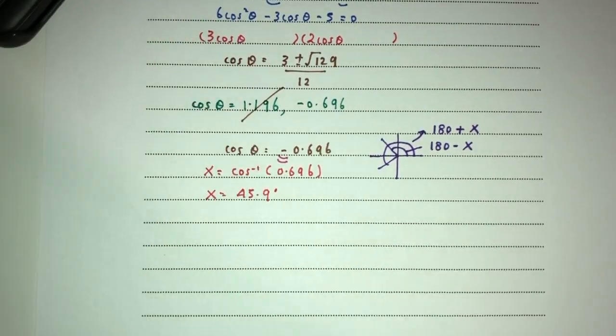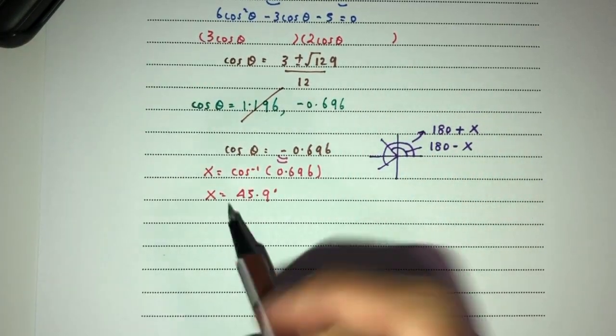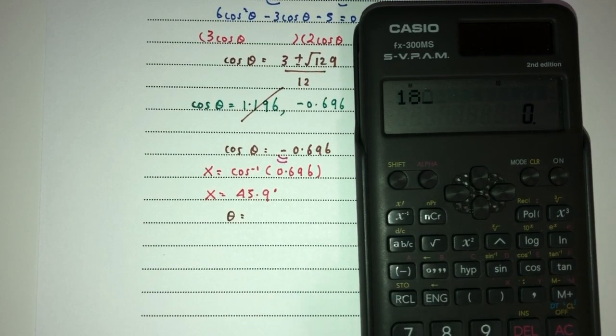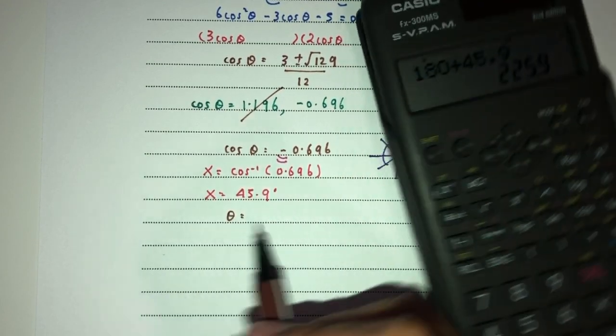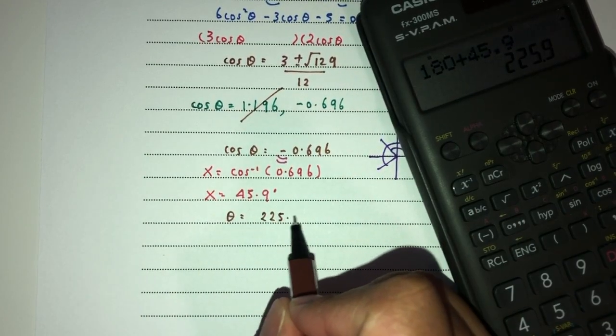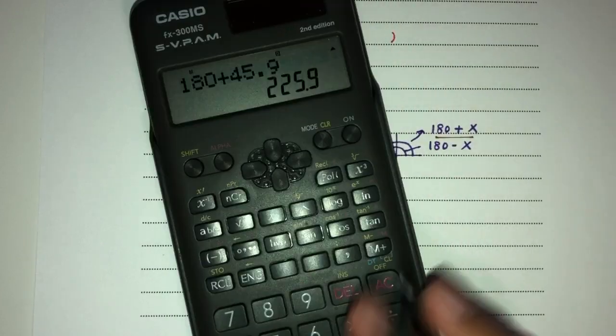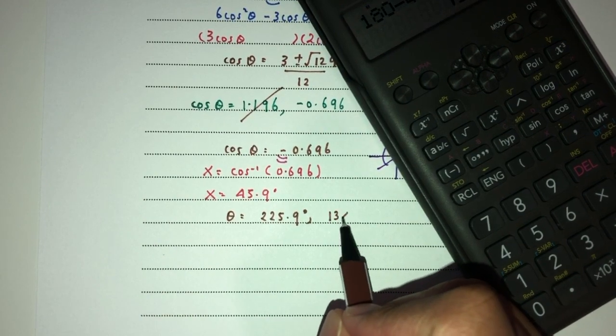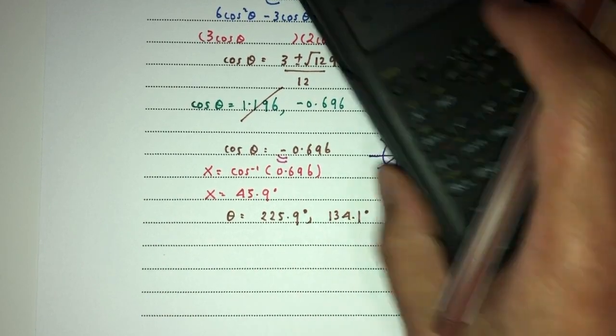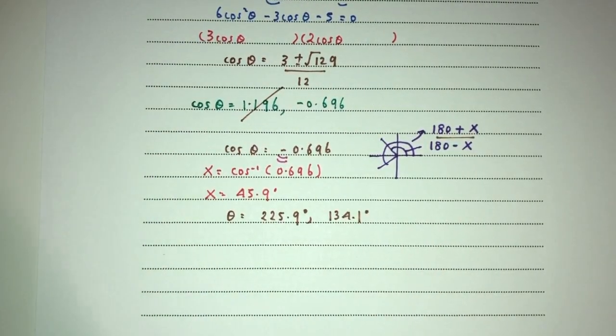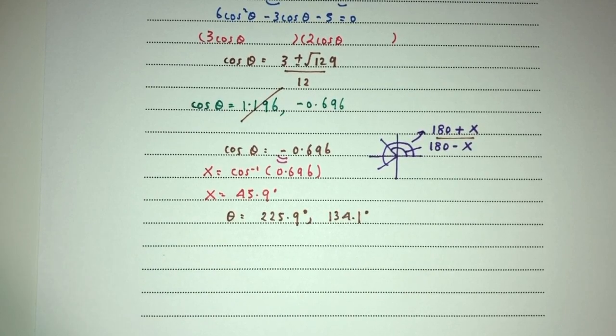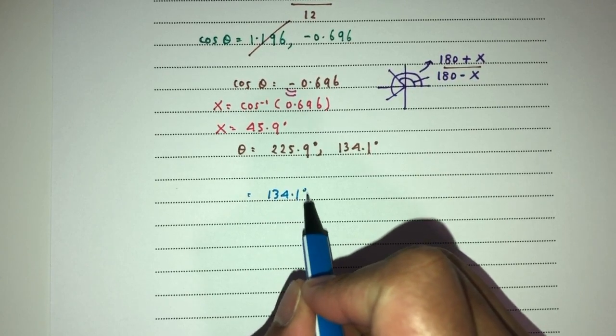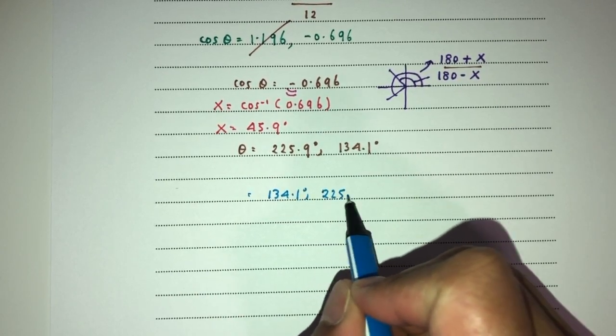So whenever you have negative, you go through this step. x will be cos inverse of that, 0.696, that should be the value of 45.9. Now in the end, finally, once you have x, we use the quadrant to find theta. Theta will be 180 plus x, that should be 225.9, or 180 minus x, that will be 134.1. So here we go. Finally we have two values of theta.